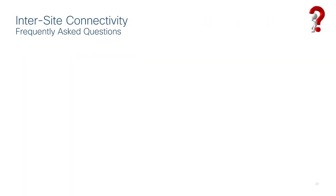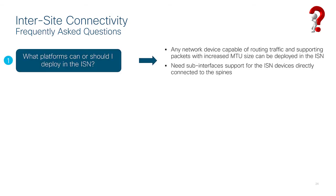Let's cover some frequently asked questions. What platforms should I deploy in the inter-site network? Inside the core, all we need from the network devices is the capability of performing layer-3 unicast routing and allowing larger MTU for carried traffic. The specific inter-site network devices that connect directly to the spine need also to support sub-interfaces and must be able to use VLAN tag 4 for sub-interfaces of different physical links connecting to the different spines deployed in that site. Only these devices have this additional specific requirement. We don't need sub-interfaces in the core of the network.